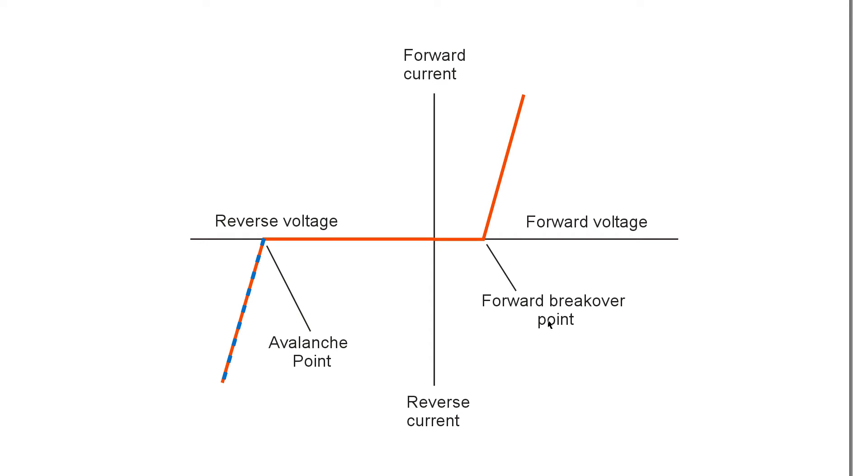However, with any diode, if you apply sufficiently large reverse voltage, it will suddenly begin to conduct. That is the avalanche effect, and the point—or the negative bias voltage at which that effect begins—is called the avalanche point.